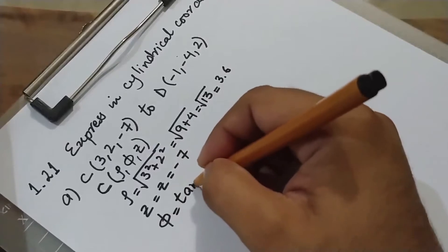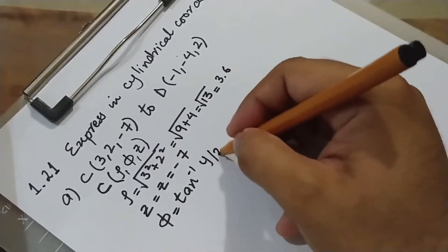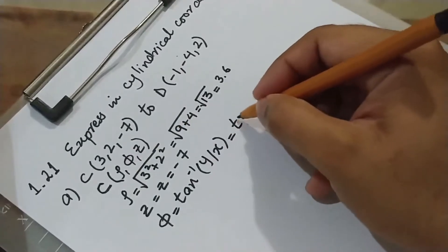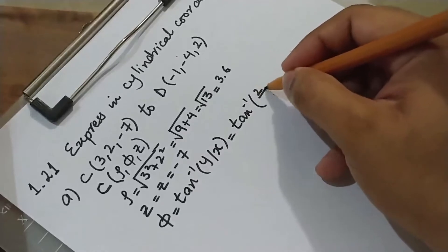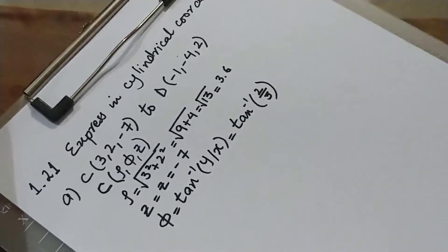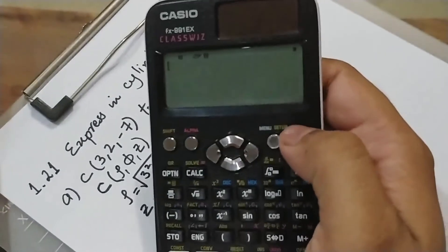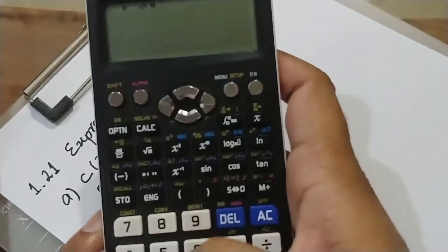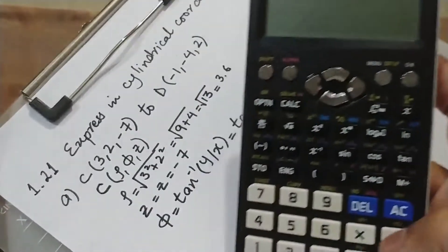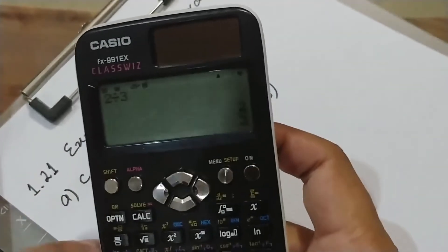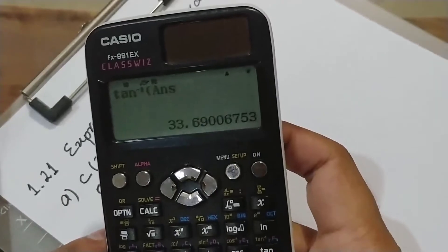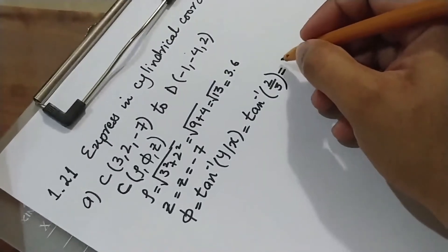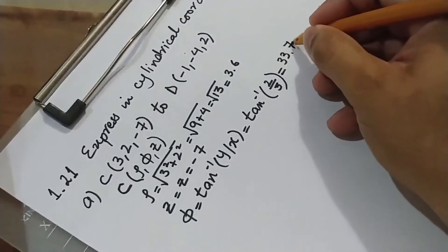However, phi is the one that is troubling students. Phi is tangent inverse of y upon x. Make sure your calculator is set to degrees. Tangent inverse of 2 divided by 3 gives approximately 33.7 degrees.